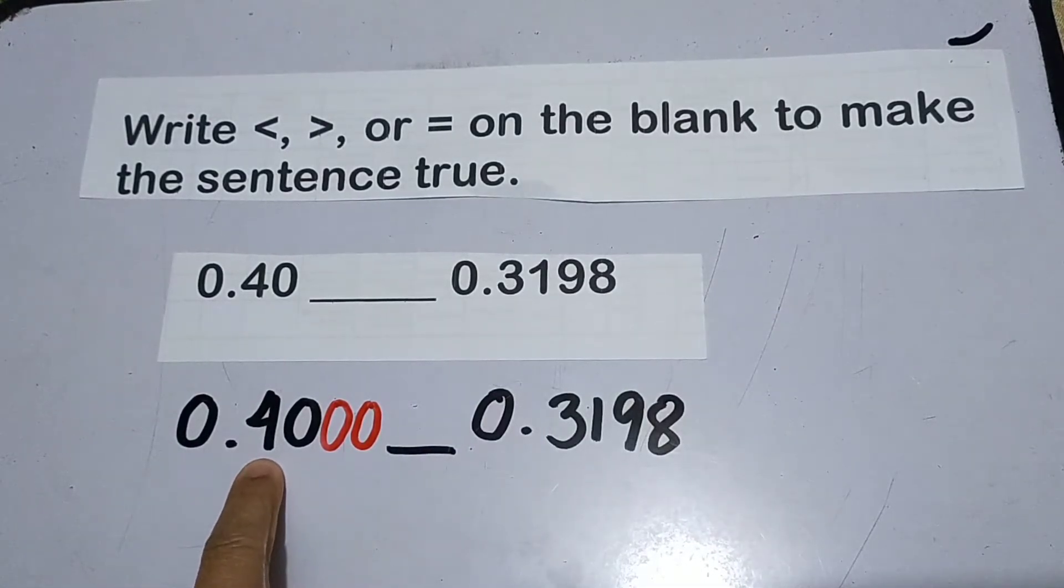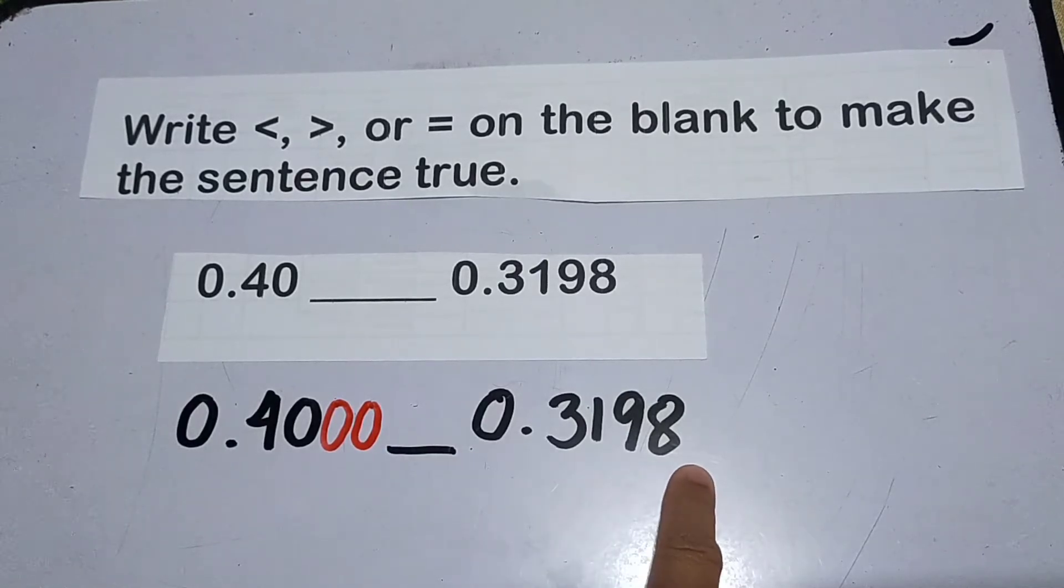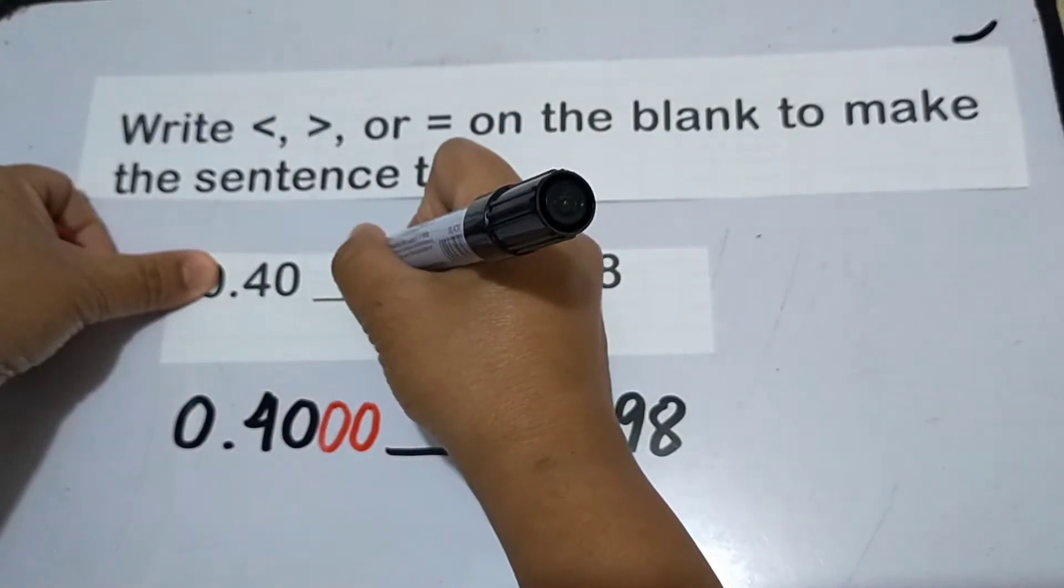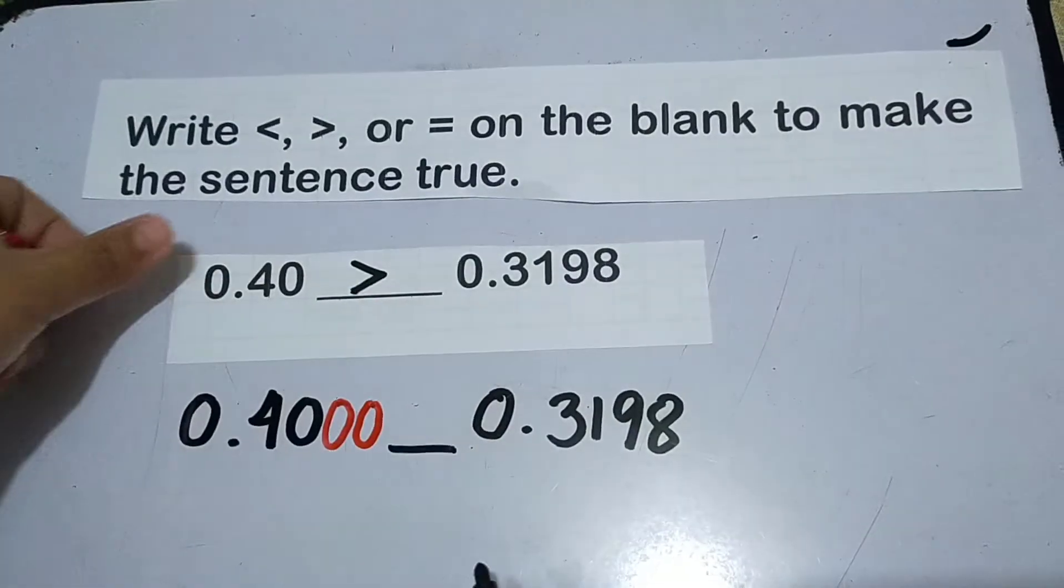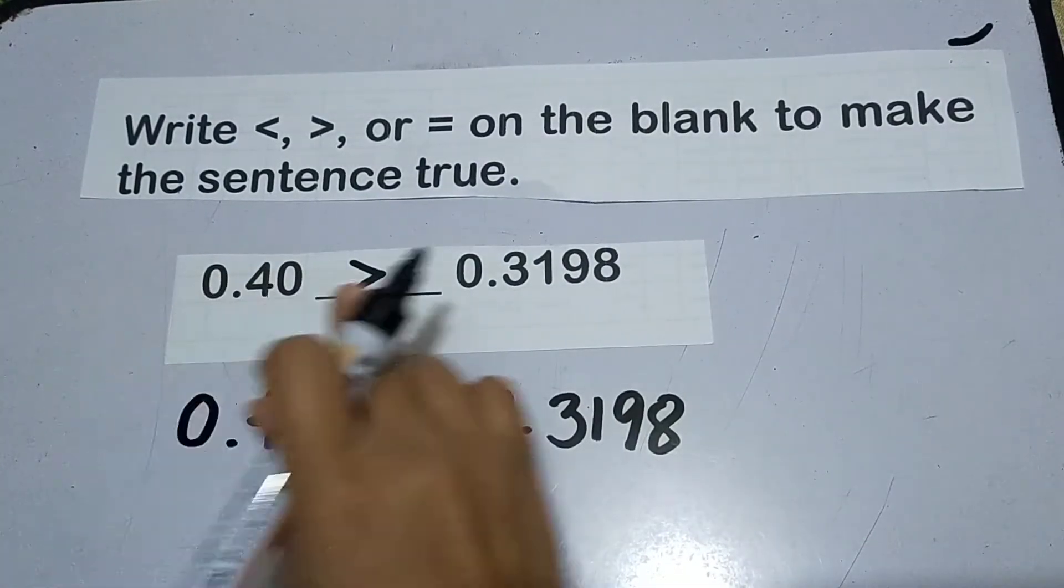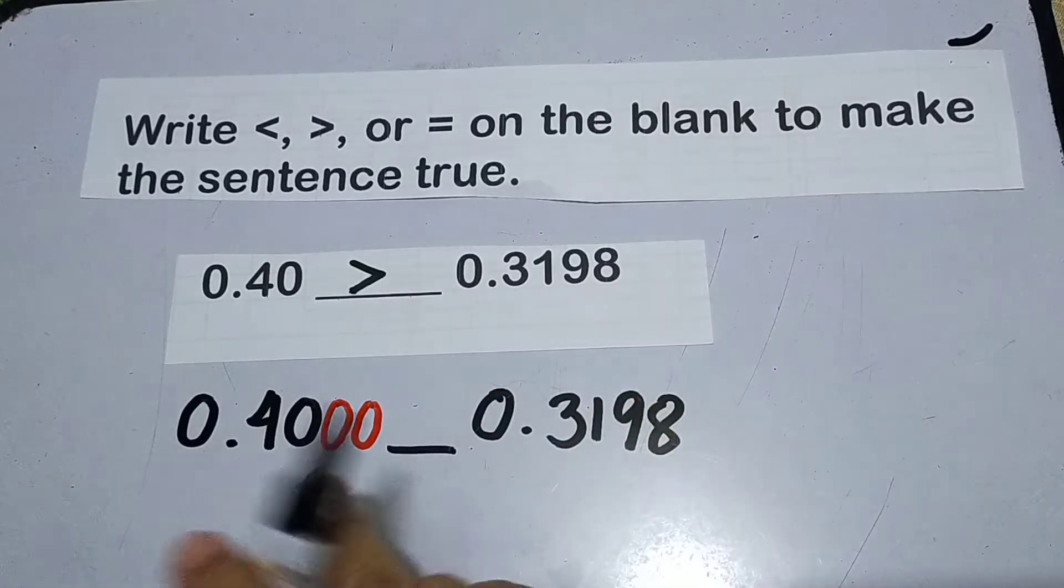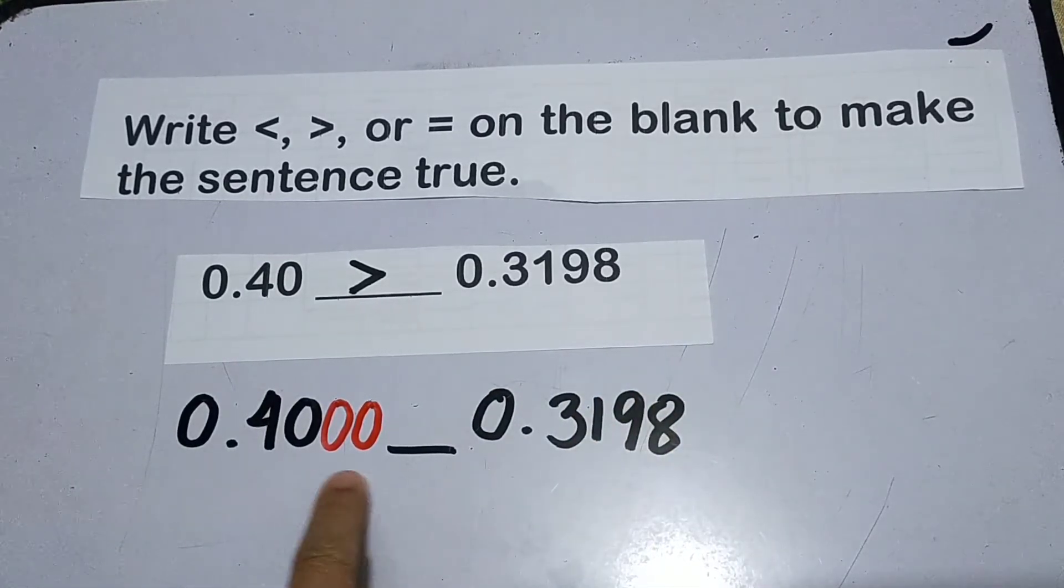So, let's say this. Ano na siya ngayon pagbinasa? 4,000 ten thousandths. And then ito naman, 3,198 ten thousandths. So that means the answer here is greater than. Mas malaki si 40 hundredths compared to 3,198 ten thousandths. That means kapag equal na yung dami ng digits, mas madali na mag-distinguish kung ano yung mas malaki.